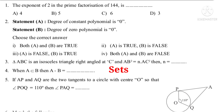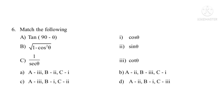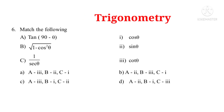Question 5: If AP and AQ are the two tangents to a circle with center O, so that angle POQ is equal to 110 degrees, then angle PAQ is equal to dash. This is a question from the chapter Tangents and Secants to a Circle. Question 6: Match the following — tan(90 − θ), √(1 − cos²θ), 1/secθ — matched with cosθ, sinθ, cotθ. This is from the chapter Trigonometry.